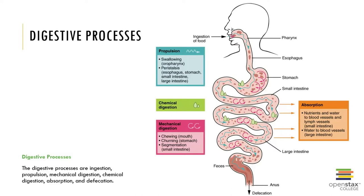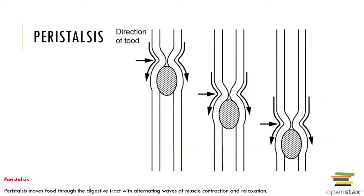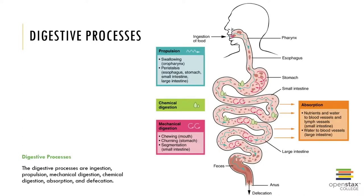In addition to looking at this process from ingestion through defecation, it's important to know that there is a level of neural control that is constantly going on. In the context of the digestive system, we're referring to neural control throughout the walls of the alimentary canal, which contain a variety of sensors that help regulate these digestive functions.